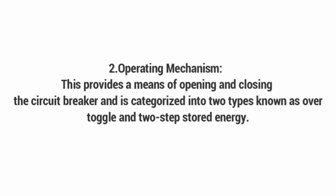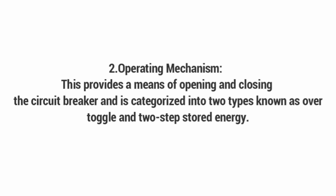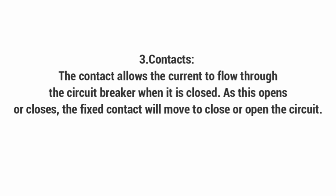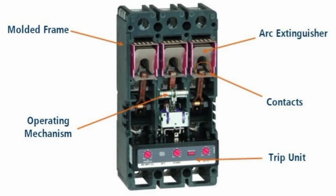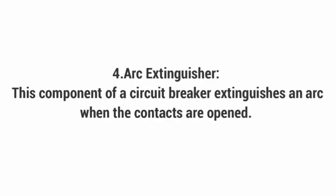The second part is the operating mechanism. It provides a means of opening and closing the circuit. Like a lighting switch, the circuit breaker opens and closes — that mechanism is called the operating mechanism. The third part is the contact. The contact allows current to flow through the circuit breaker when it is closed. It's like a copper bar that connects the opening and closing of the circuit.